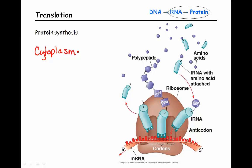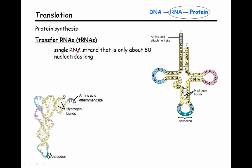As we go through and talk about the molecules, you want to notice what they're made of and what their overall role is going to be in translation. The first ones we want to talk about are the transfer RNAs, commonly called tRNAs. They're called transfer RNAs because they will be bringing the amino acids to the translation process.